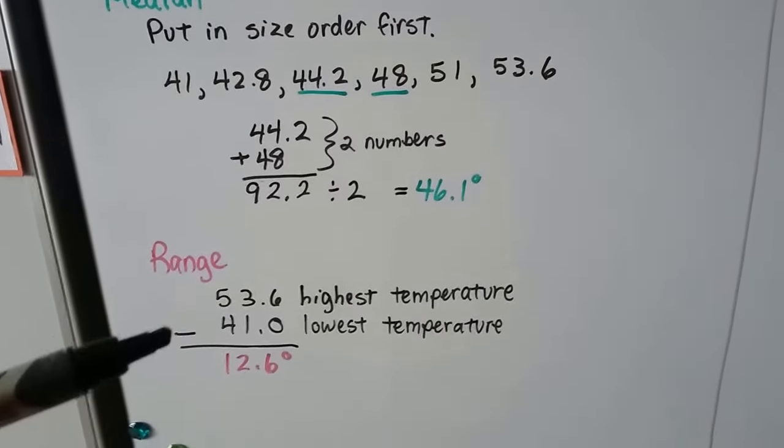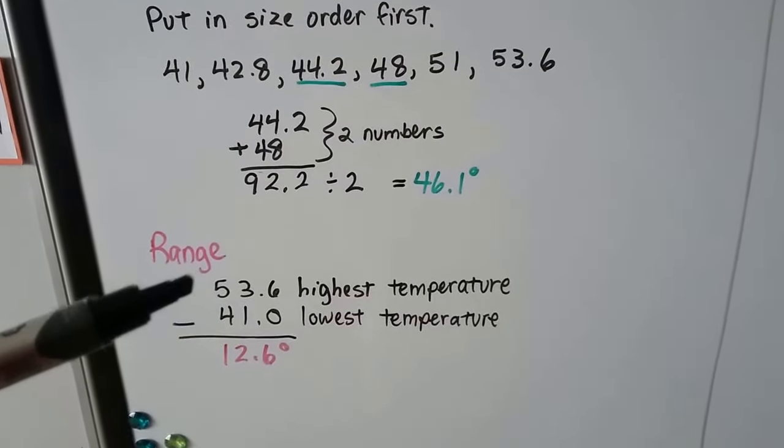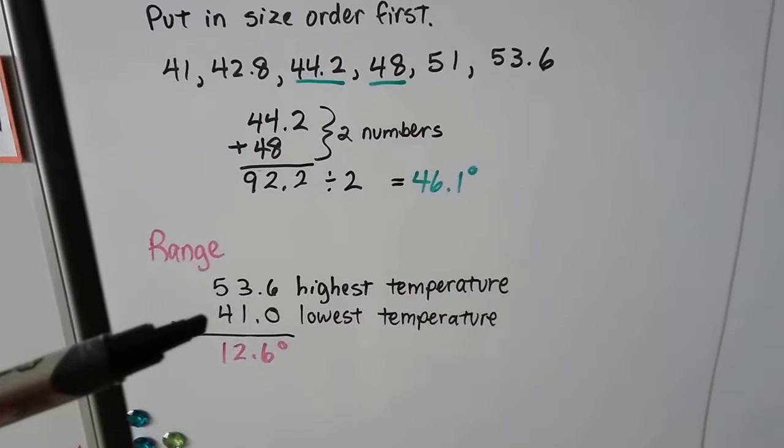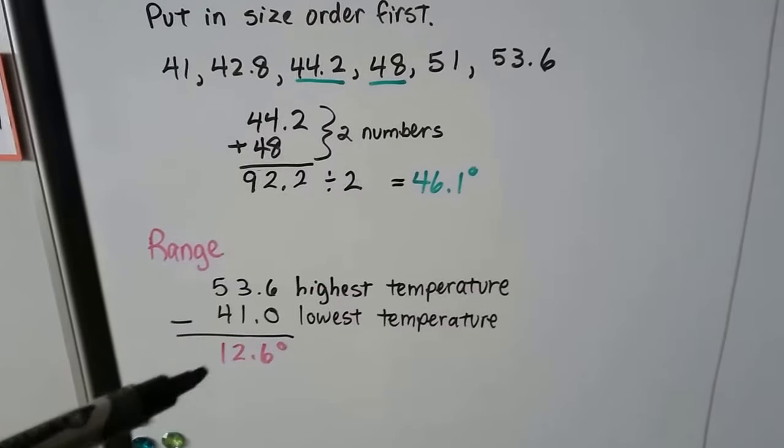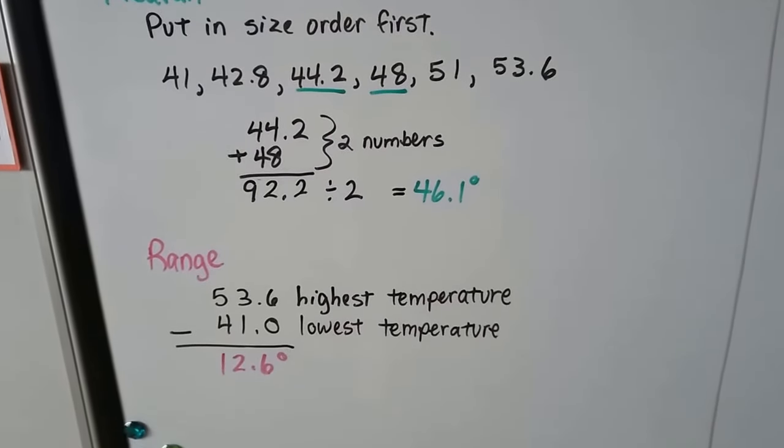We get 46.1 degrees. For the range, we take the highest temperature, the 53.6, and the lowest temperature, 41. I just put the zero there as a placeholder. You'll probably be doing this on a calculator. We get 12.6 degrees for our range.